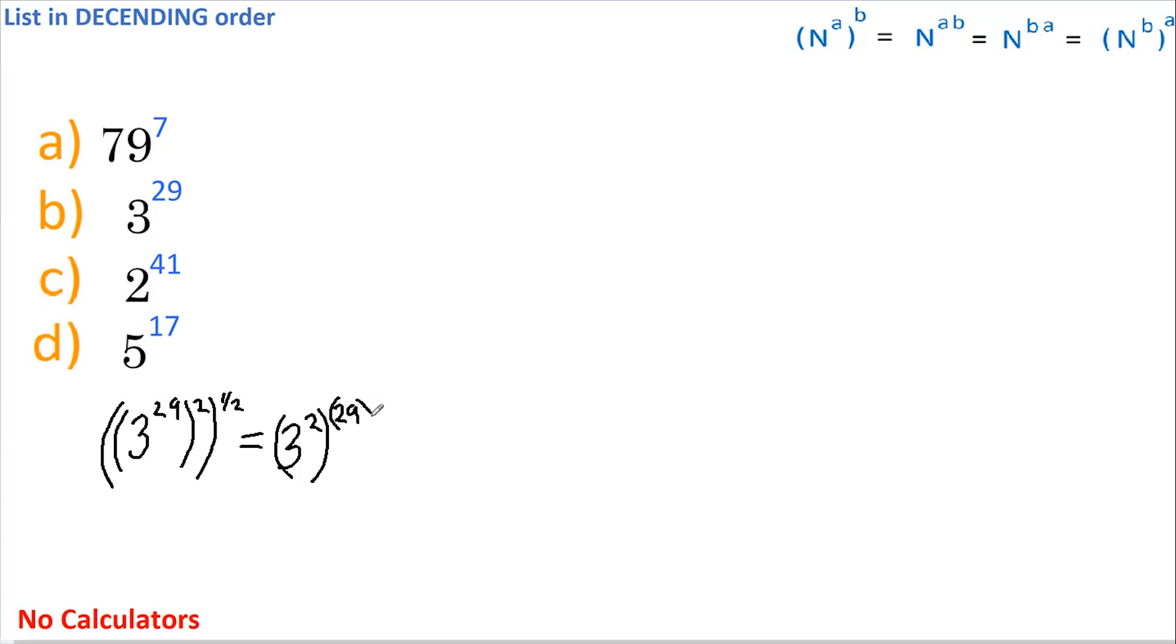So this equals 3 squared, which is 9, to the power of a half of 29, which is 14 and a half.